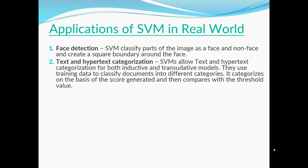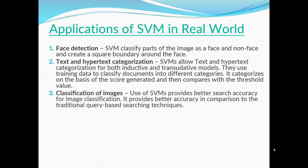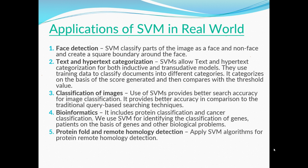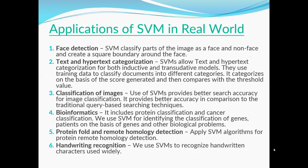For image classification, SVM provides better search accuracy compared to traditional query-based searching techniques like Google. In bioinformatics, SVM is used for protein classification and cancer classification — identifying gene patients on the basis of genes and other biological problems, including protein folding and remote homology detection. Finally, we use SVM for handwriting recognition to recognize handwritten characters, and it is widely used for this purpose.